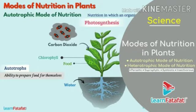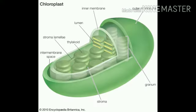Photosynthesis is a complex process in which a chemical reaction changes carbon dioxide and water to produce glucose, with the help of sunlight and in the presence of chlorophyll. Sunlight is the major source of energy for photosynthesis. Leaves are the site where photosynthesis takes place, and they have special organelles called chloroplasts which contain the green pigment chlorophyll.